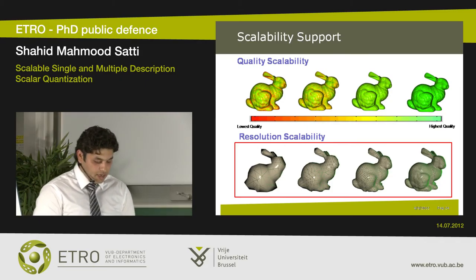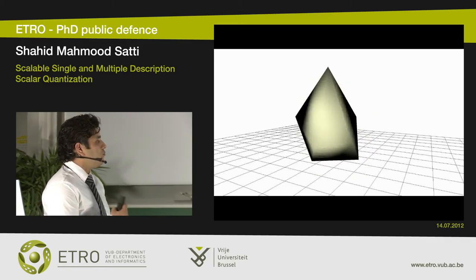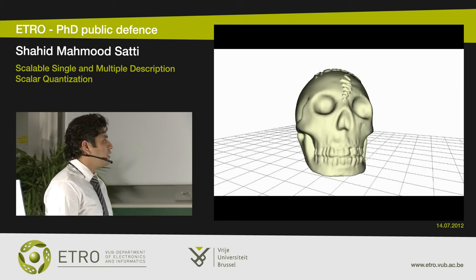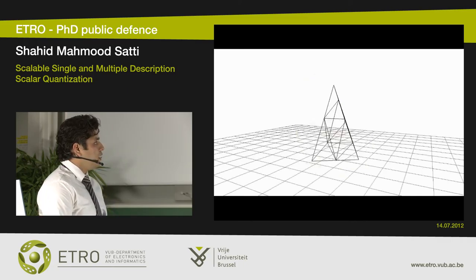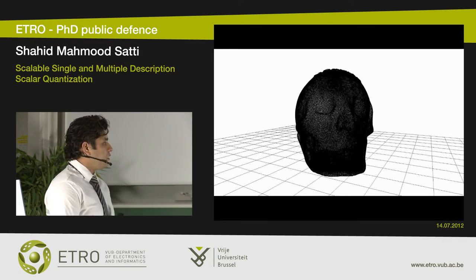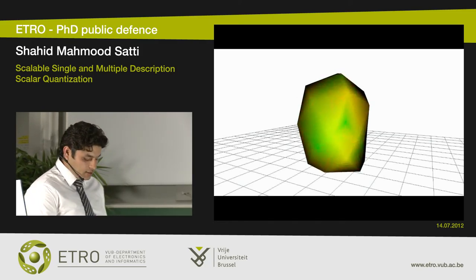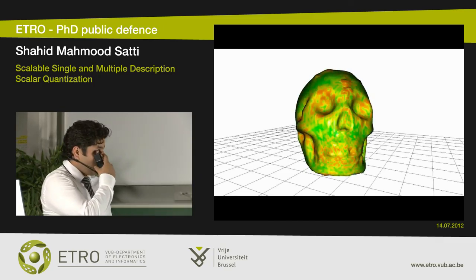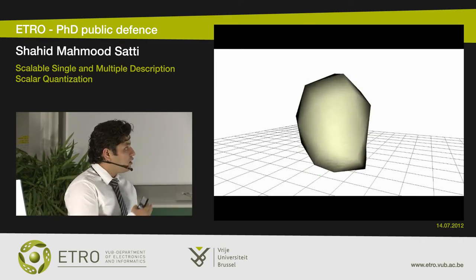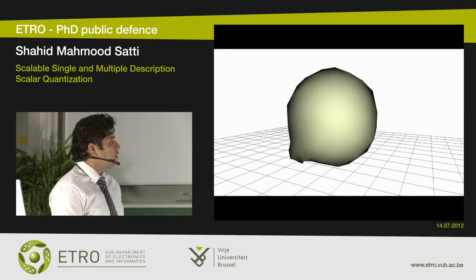Here I have integrated a demo for scalable decoding of this skull mesh. As we receive more and more data, we can reconstruct better quality. Due to its scalable nature, you can stop the decoding process at any point in time and reconstruct an intermediate quality mesh. Shown in wireframe, the vertices and edges refine as more rate is received. The red color shows the error with respect to the original input mesh, and as we decode more data, we reconstruct the green mesh.